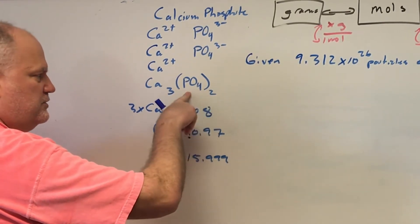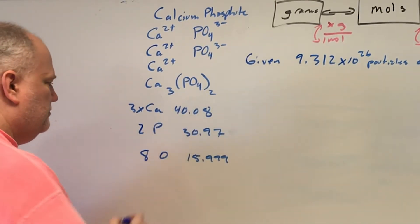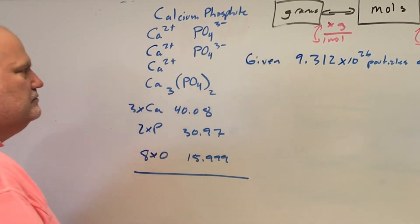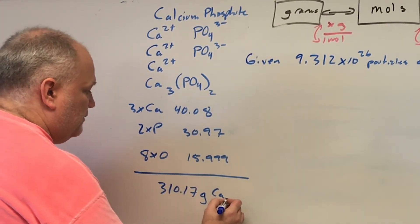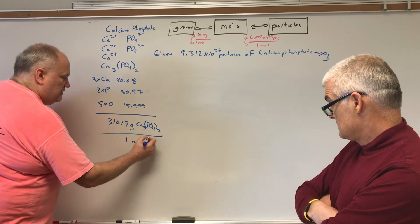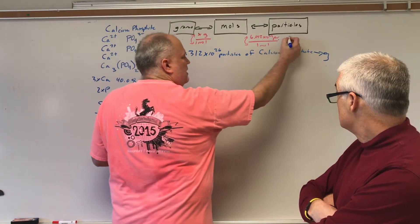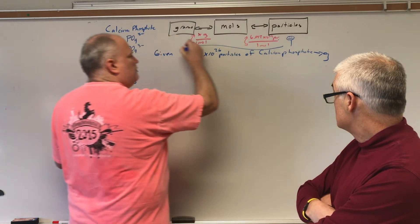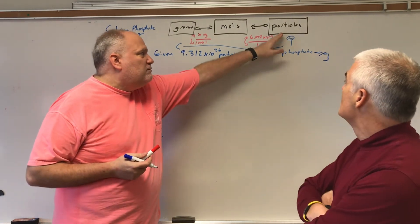So I said three times 40.08 plus two times 30.97 plus eight times 15.999. Grand total of 310.17. Now I'm going to pause here for a moment, lest you think that this was the first thing we had to do. We know that we have to go here at the end, but we're actually starting at particles over here. So our first step isn't going to be to convert to grams. Just like we did in the previous problem, we're kind of happy and we know we have to go all the way over here.